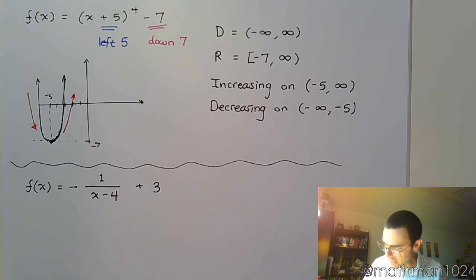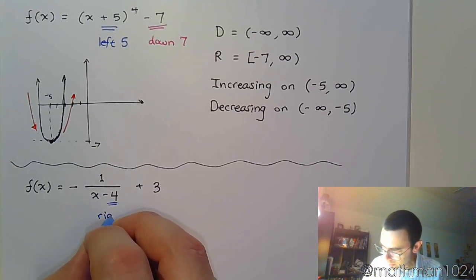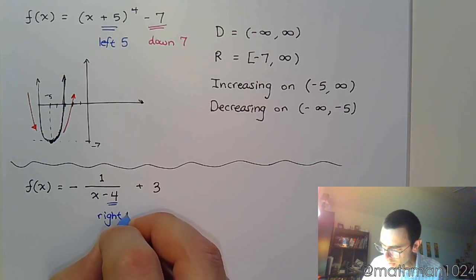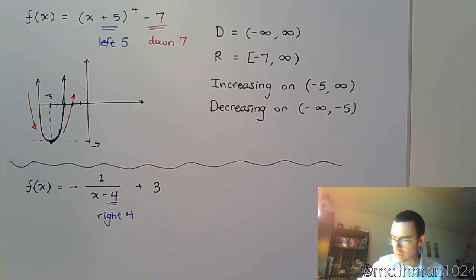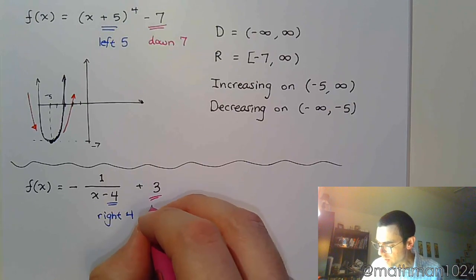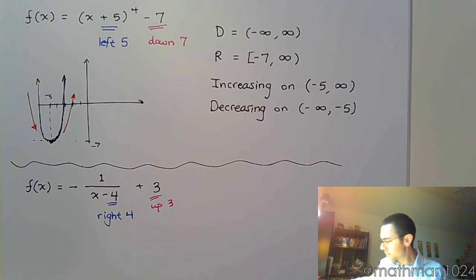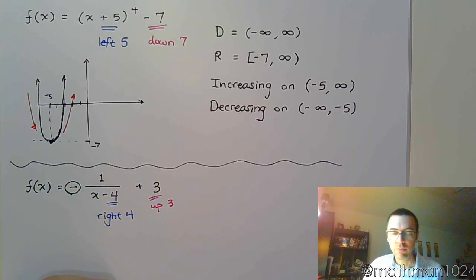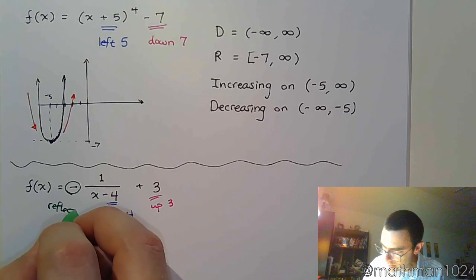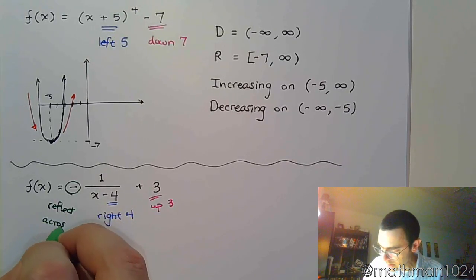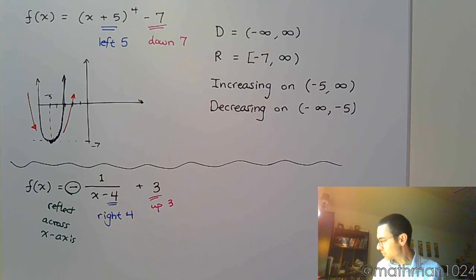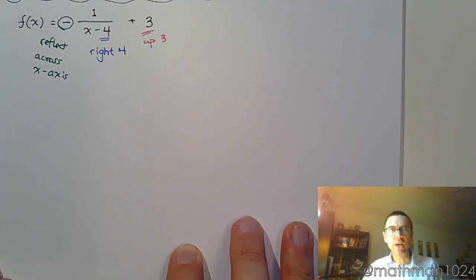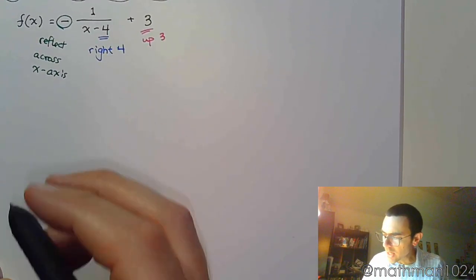And we're going to take the minus four. We're going to go to the right four. We have the plus three, so that means up three. And then we have this negative right here. And that negative means that you're going to reflect across the x-axis. So let's try to put all of that information together to get a good sketch for our graph.